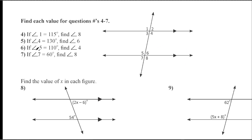Angle five is 110. So I write 110 there. They ask you to find angle four, which is way up here. Angle four and angle five — what are they? They're alternate interior angles. And alternate interior angles are equal to each other. So here's another one where I don't have to do any math — I can just look at it and say that angle four is also 110.